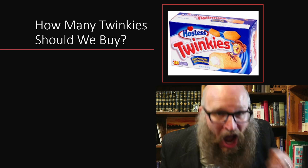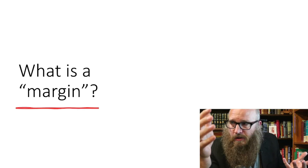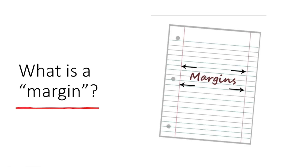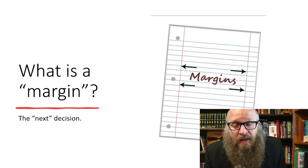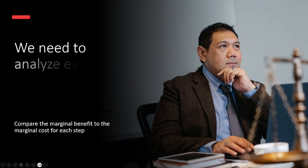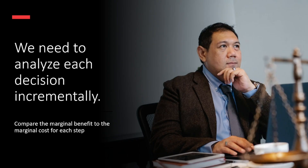How many Twinkies should we buy? The next economic concept is thinking about the margin. What is a margin? We can think of the margins of a paper — they're on the edges of the paper. The marginalized are those on the edges of society. In the context of economics, it's going to be the next decision. We need to analyze each decision incrementally.